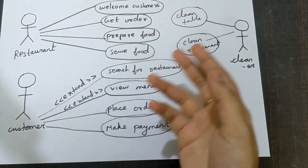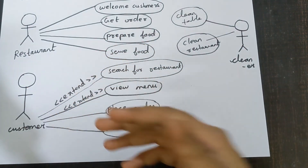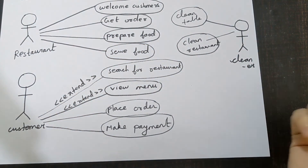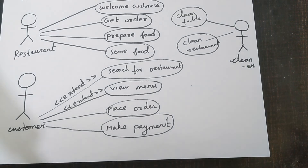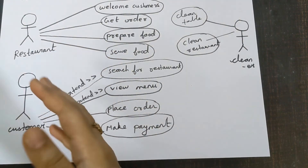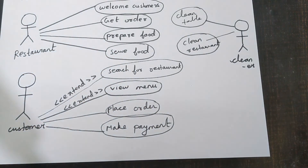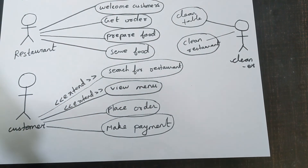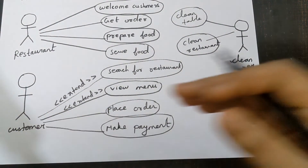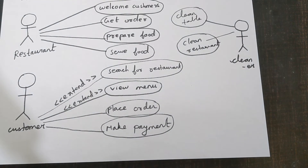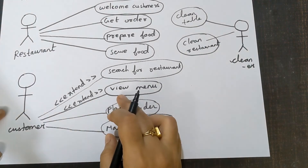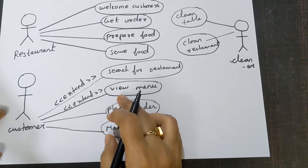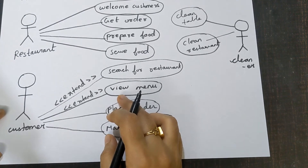Some people look into the menu and check the price of the coffee before ordering. But some people just say they want coffee without looking at the menu. So it is not mandatory — not all customers have to look into the menu before placing an order. Some customers will say they want biryani, coffee, or juice without looking at the menu at all.